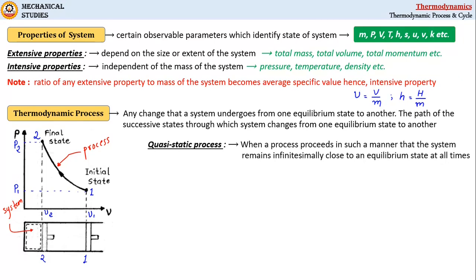A quasi-static process, also called a quasi-equilibrium process, is the process in which all intermediate states remain infinitesimally close to equilibrium.